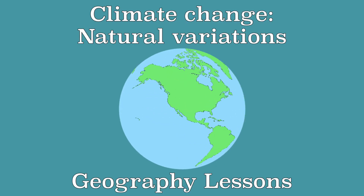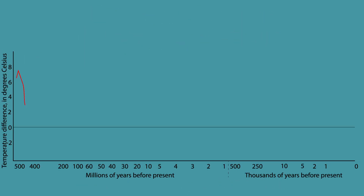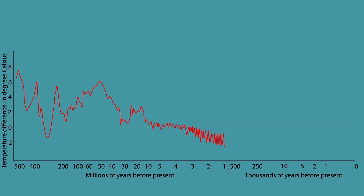The average temperature on Earth has always fluctuated. Millions of years ago, it was on average 8 degrees warmer on Earth. There were also ice ages thousands of years ago when the average temperature on Earth was 2 degrees lower. How did these temperature differences arise?